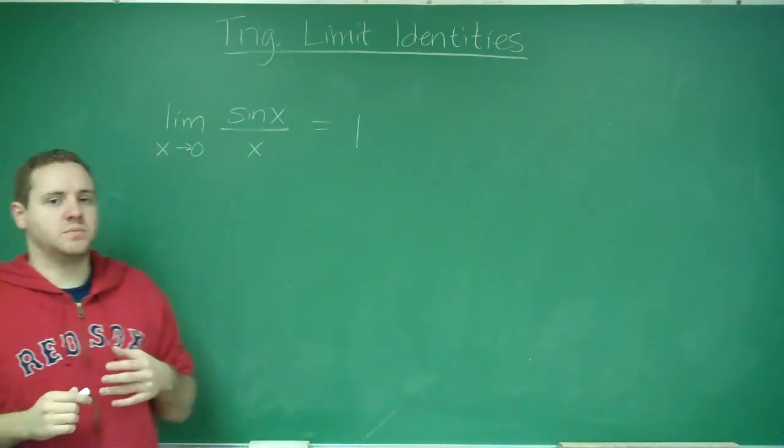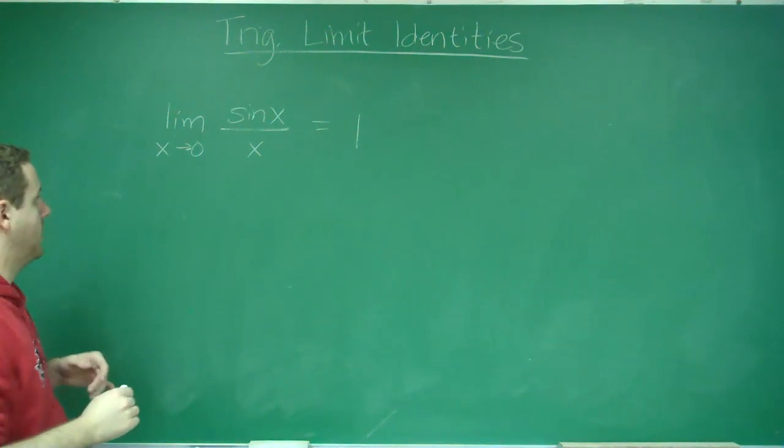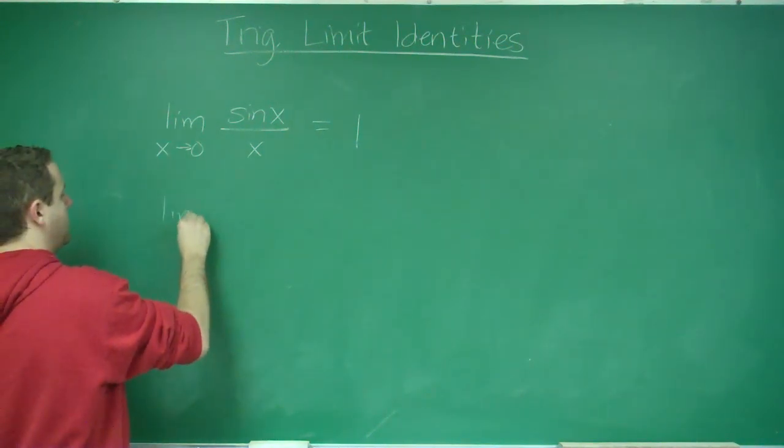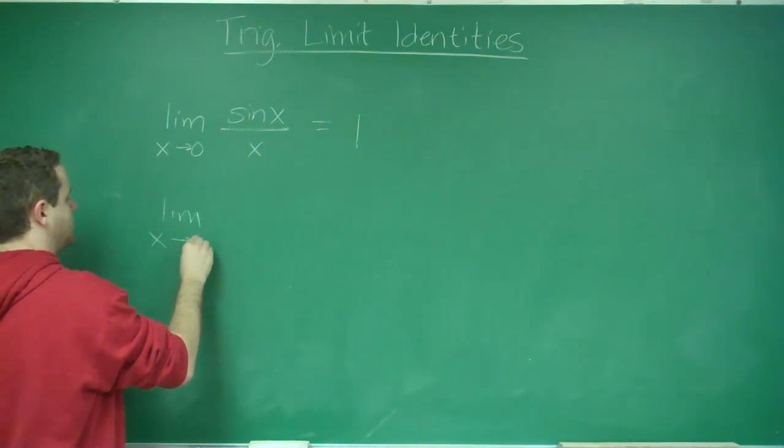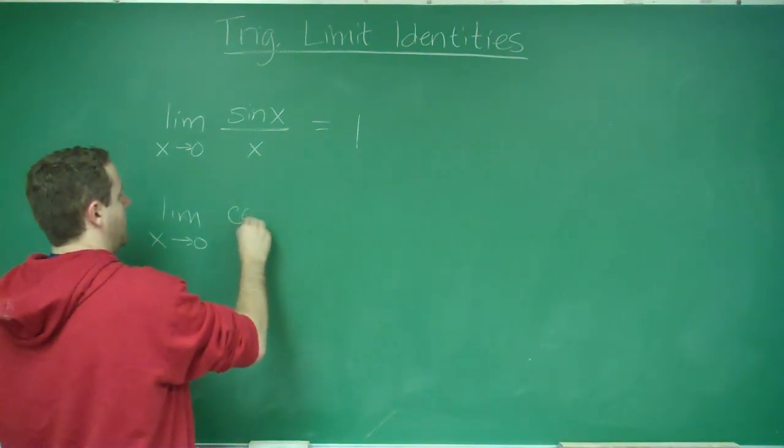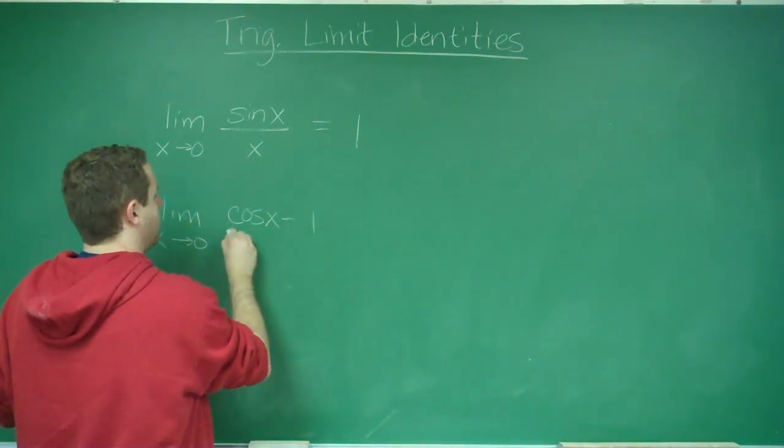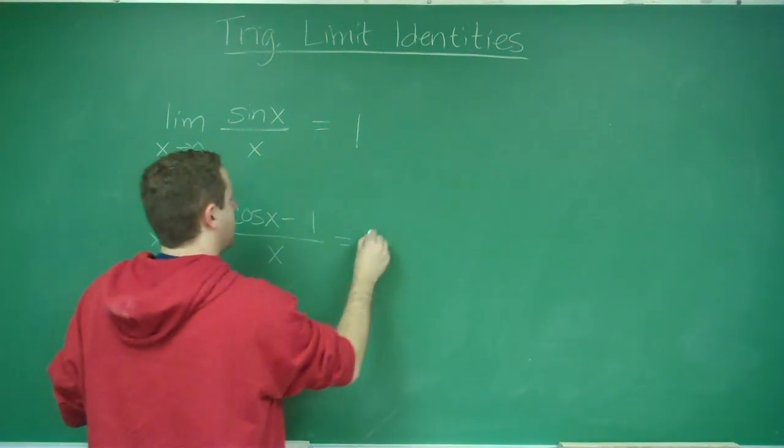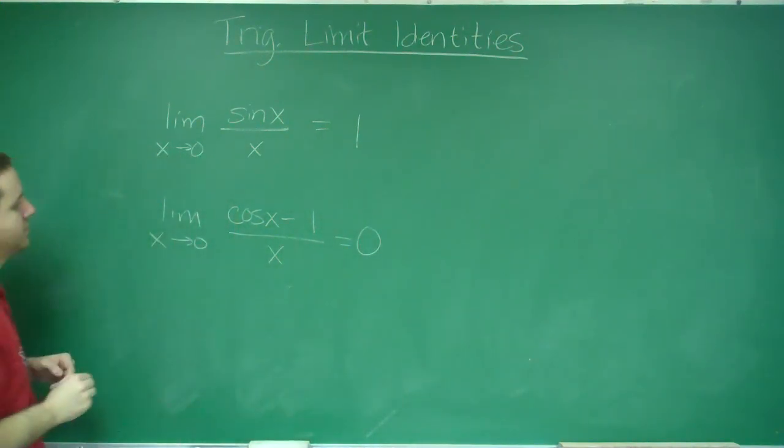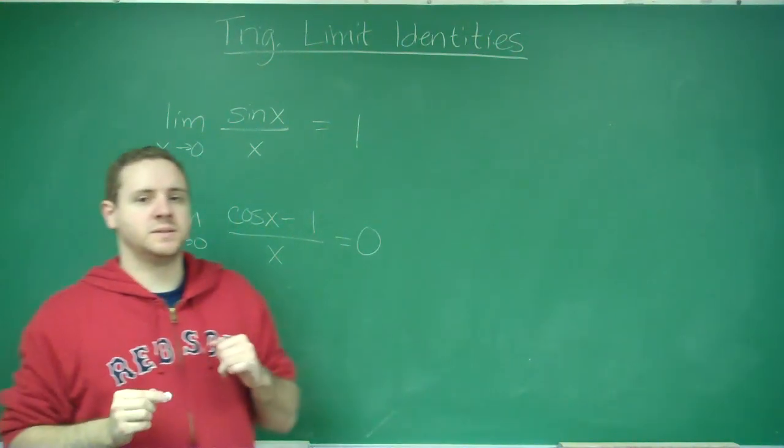That's probably the one that's most frequently brought up. The other one is the limit as x approaches 0 of cosine x minus 1 over x is equal to 0. These are your main two trig limits.